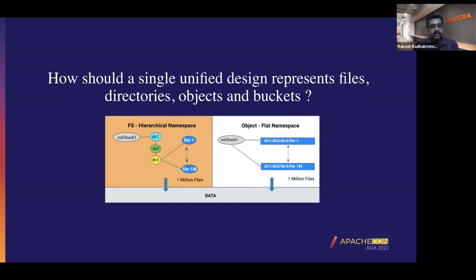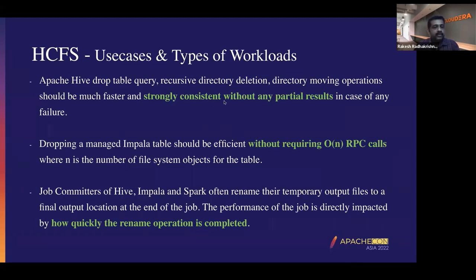We'll talk about how a single unified design represents files, directories, objects, and buckets. Underneath you have data in place, and the same data can be represented in various ways — various namespace fashions. On the left you can see the file system hierarchical namespace, where everything is in a parent-child relationship with directories and files underneath. On the right hand side you can see the object store or key-value store, where we have a flat namespace. The same file represented in flat namespace would have the complete absolute path — for example, directory one slash directory two slash three slash file one.